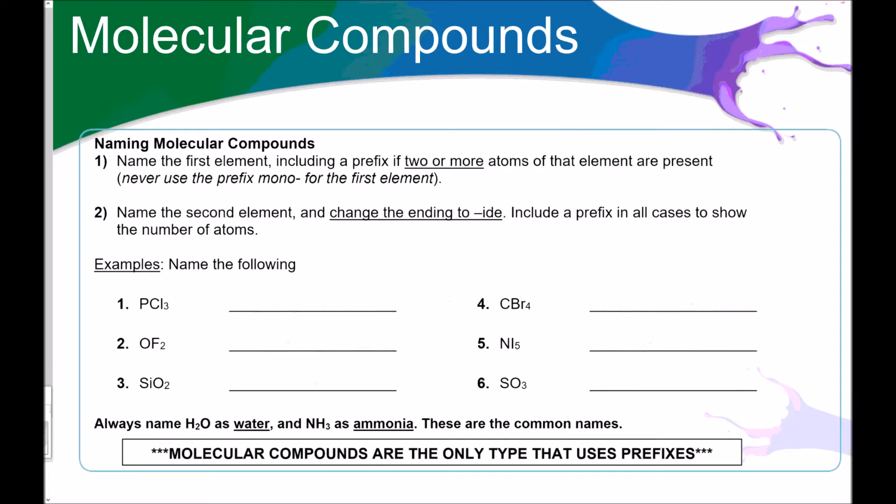Naming molecular compounds. You have to have that prefix chart memorized. Name the first element, including a prefix if two or more atoms of that element are present. You never use the prefix mono for the first element. For the second element, change the ending to ide and include a prefix. So let's try some of these. PCL3. There's just one phosphorus, so I'm just going to write phosphorus. And then chlorine, I'm going to change the ending to chloride, and there's three of them. So phosphorus trichloride. Pretty easy.